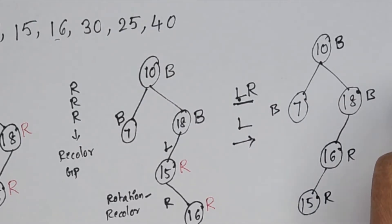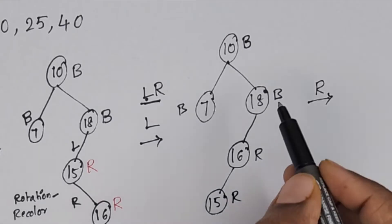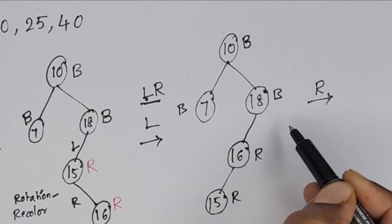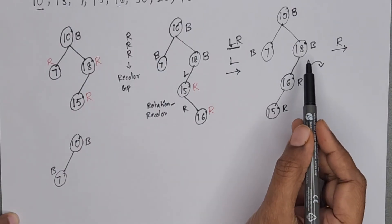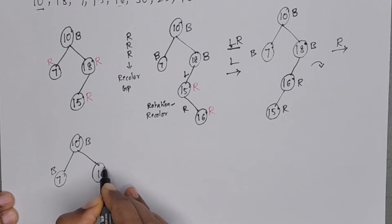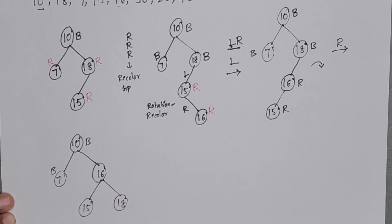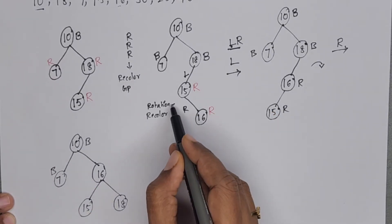Now we perform the right rotation, including the grandparent 10. When we rotate right, the middle node becomes the root. 16 goes up and becomes the root of this subtree. 15 is left of 16 and 18 is right of 16. 10 is black and 7 is black. Rotation is done.